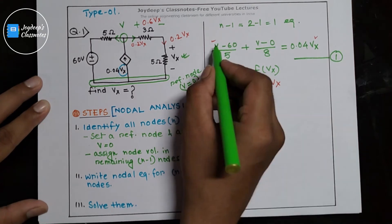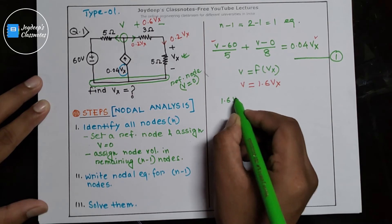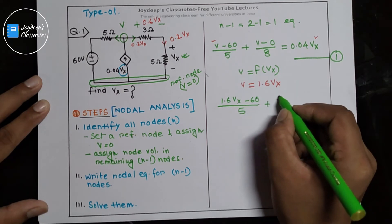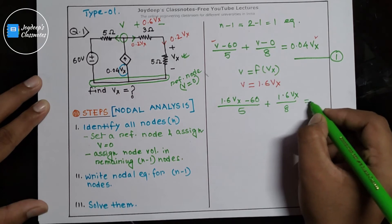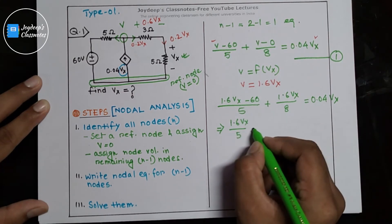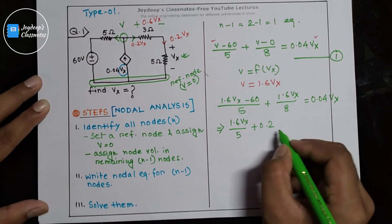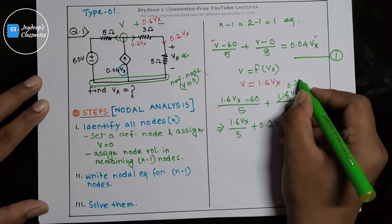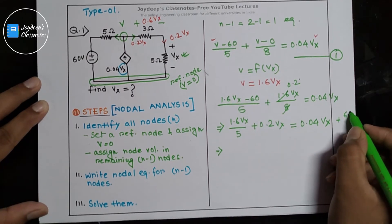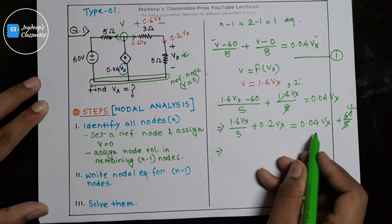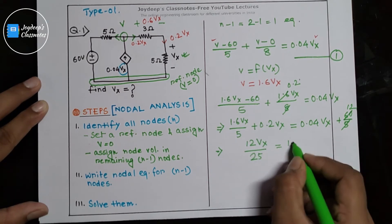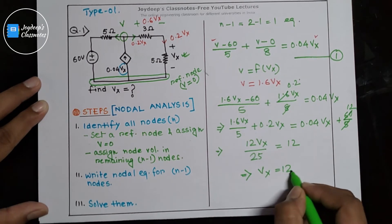Substituting into the equation: (1.6 Vx minus 60) divided by 5, plus 1.6 Vx divided by 8, equals 0.04 Vx. Solving this gives 12 Vx divided by 8, so Vx divided by 25 equals 12. Therefore Vx equals 12 volts.